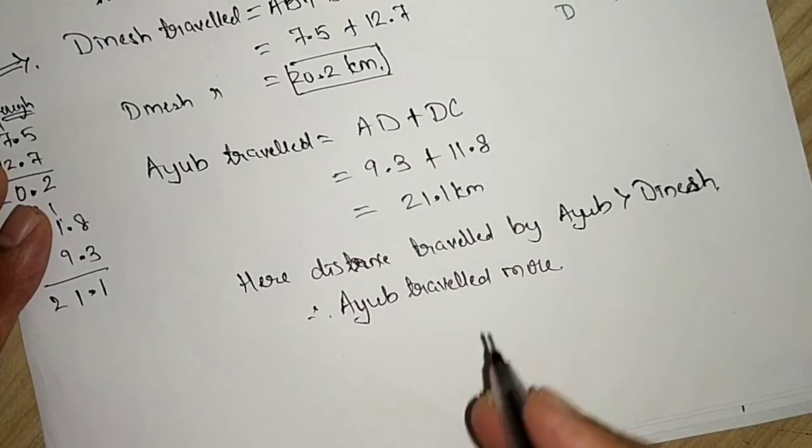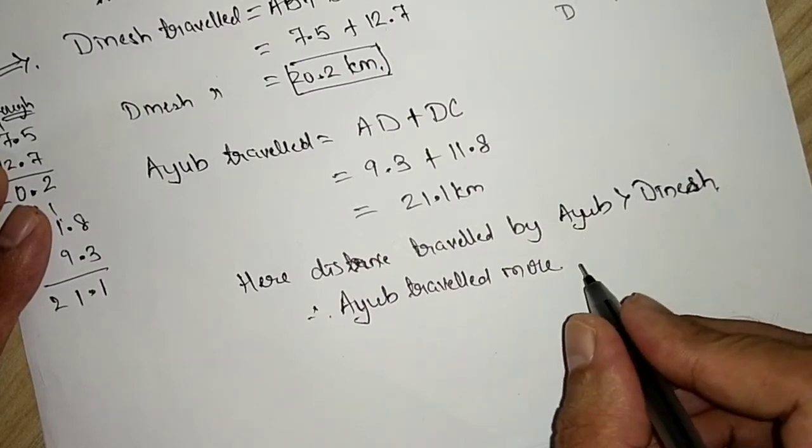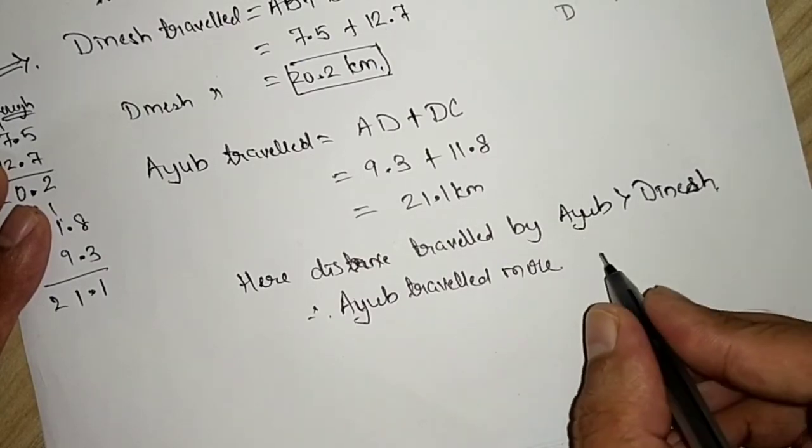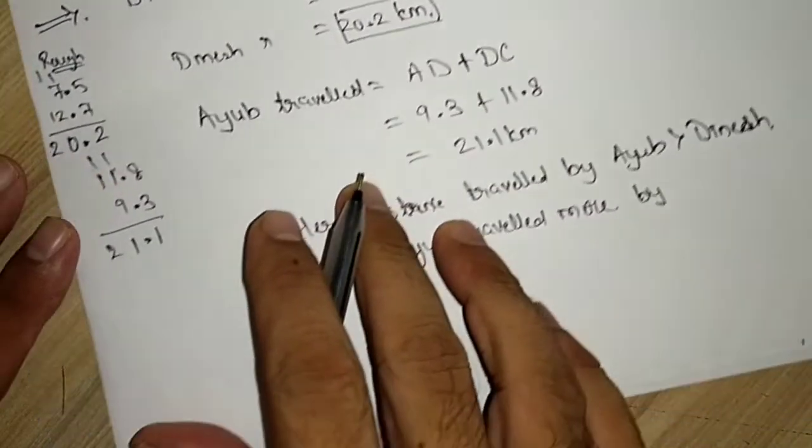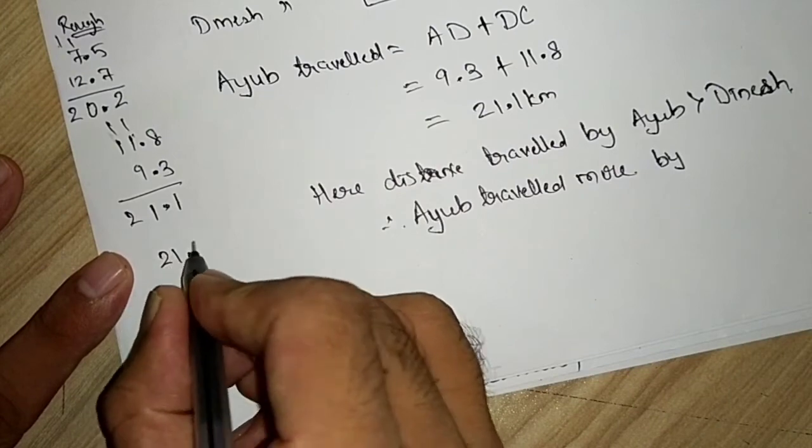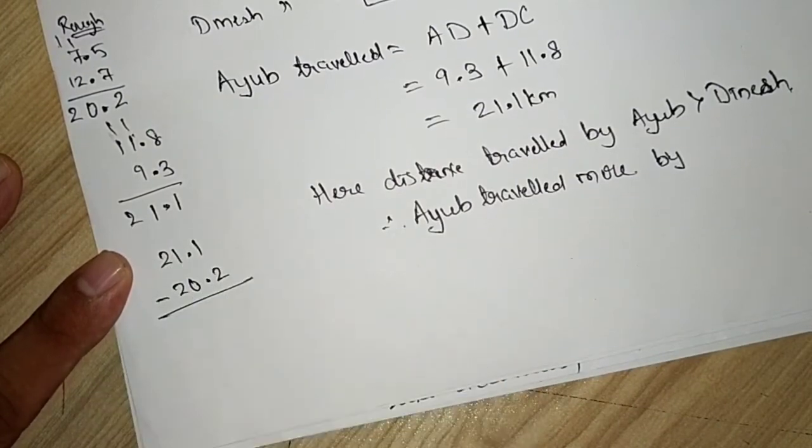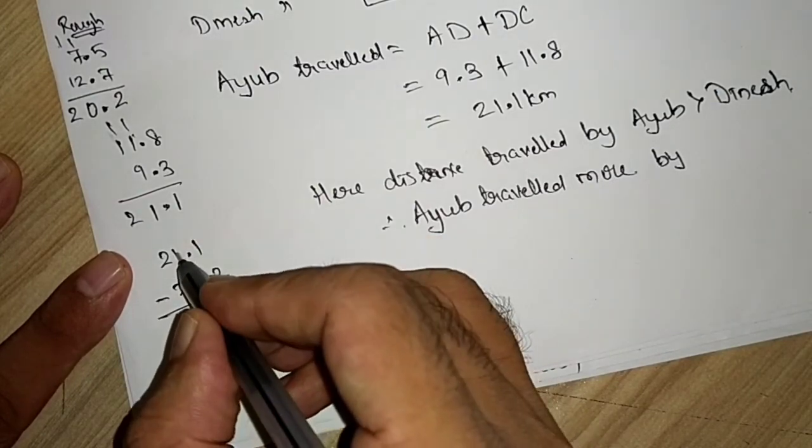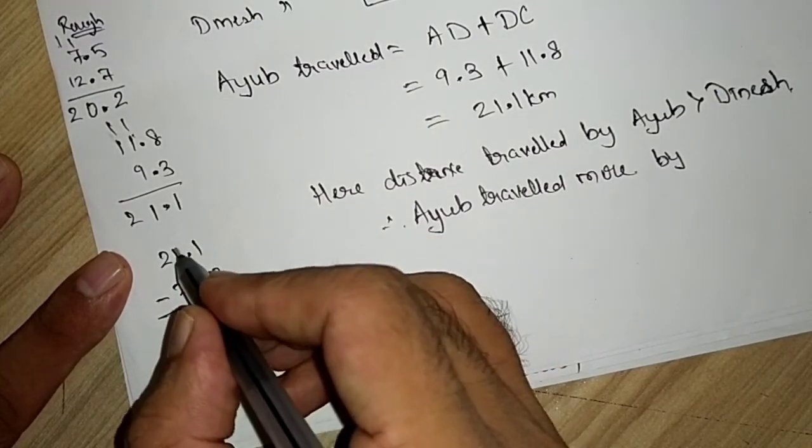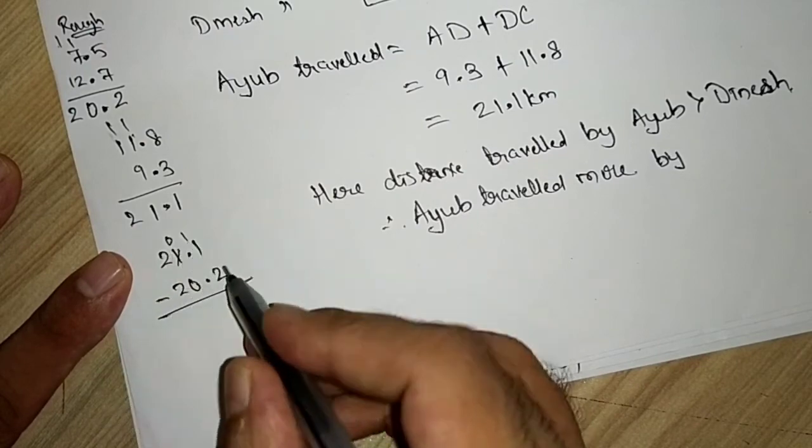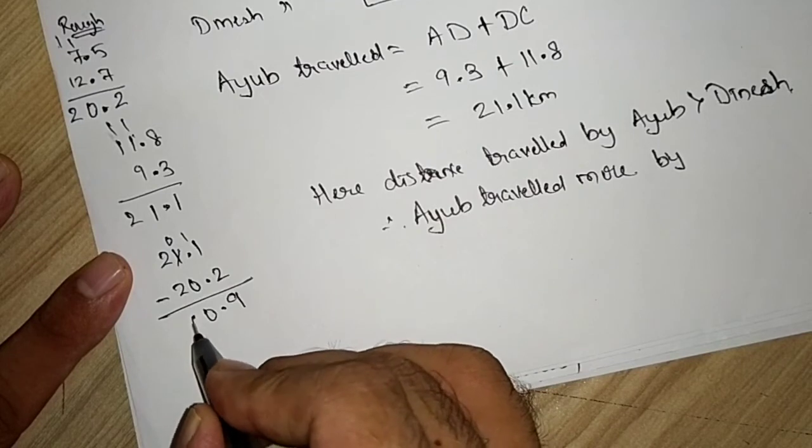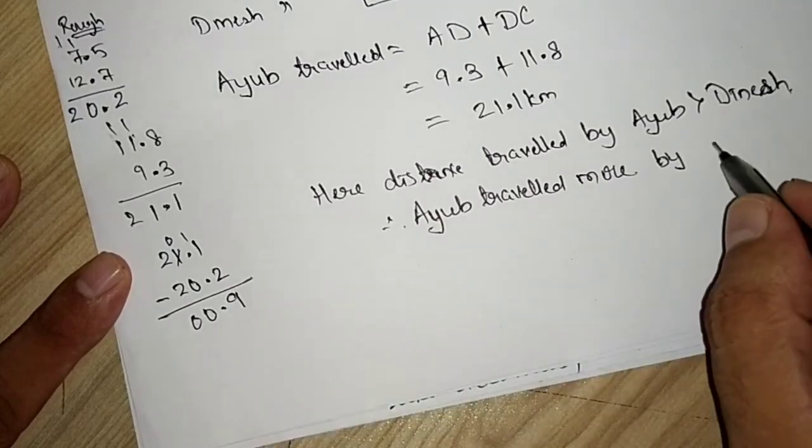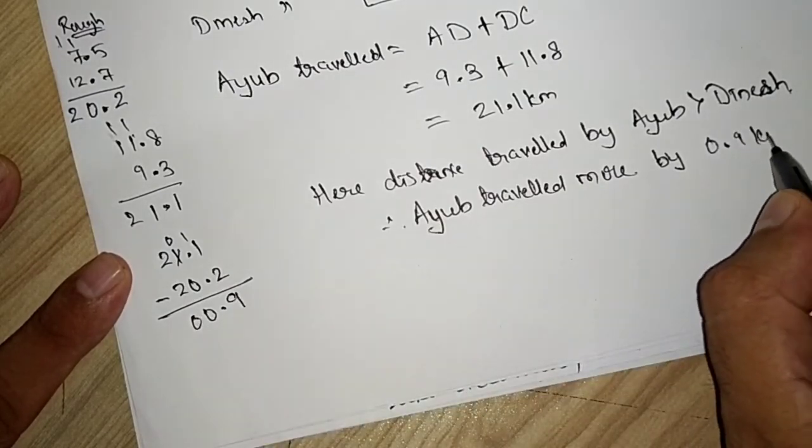Also we have to calculate how much more. So, Ayub travelled more by, let us calculate 21.1 minus 20.2, because we have to find how much more he travelled. Here, 1 is less than 2, so we will carry from here, so it will become 11 minus 2 is 9, 0, 2 minus 2 is 0, so 0.9 km.